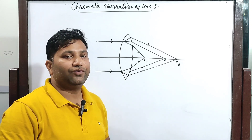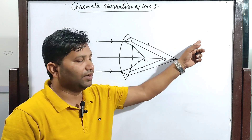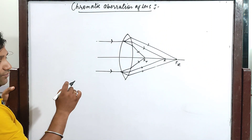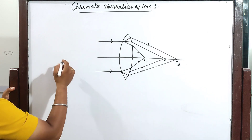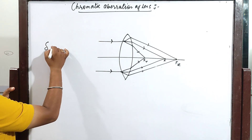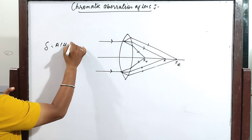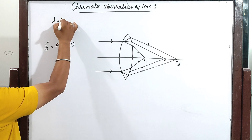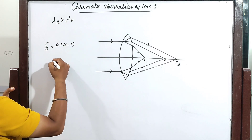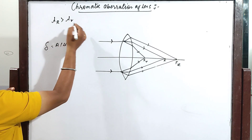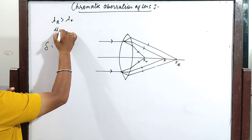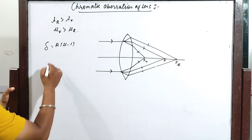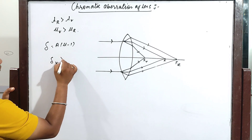The violet color has maximum deviation and the red color has the least deviation. We have discussed that deviation delta equals (mu minus 1) times A, and from Cauchy's Dispersion Law, lambda for red is greater than lambda for violet. Therefore, the refractive index for violet color is greater than for red color, and hence the deviation for violet color is more than the deviation for red color.